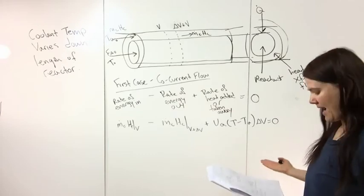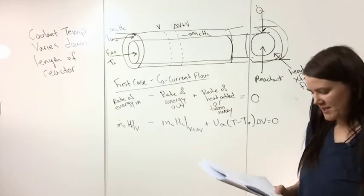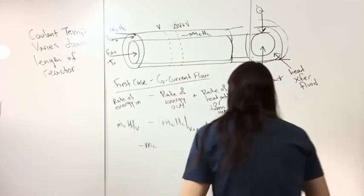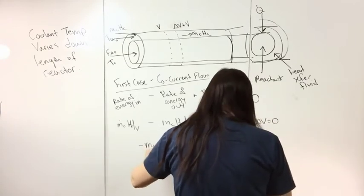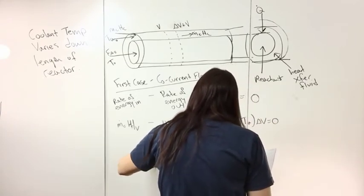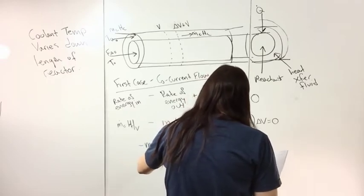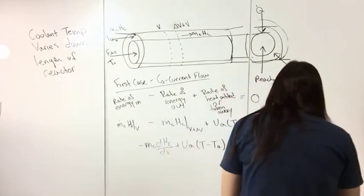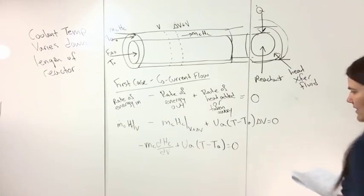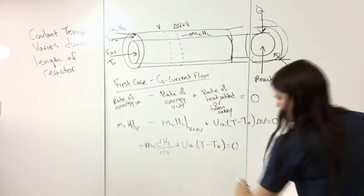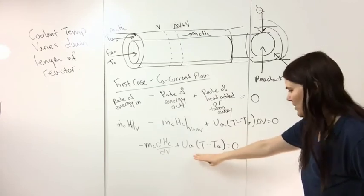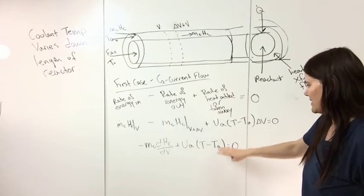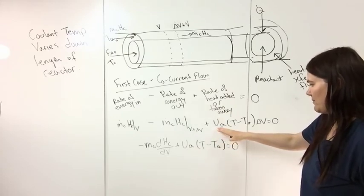I'm going to divide this by delta V and take the limit as delta V approaches zero. If I do that I get minus the mass flow rate dhc/dV plus UA(T - Ta) is equal to zero. I didn't go through the details on this because by now this is pretty much the same method as every other balance I've been doing, so I assume you know how to go from here to here.